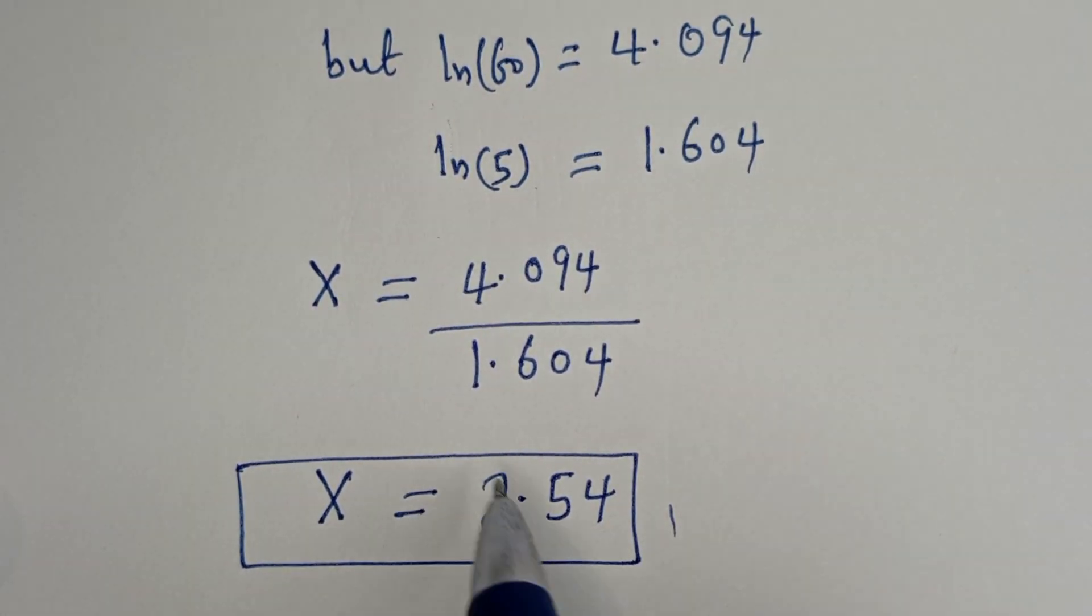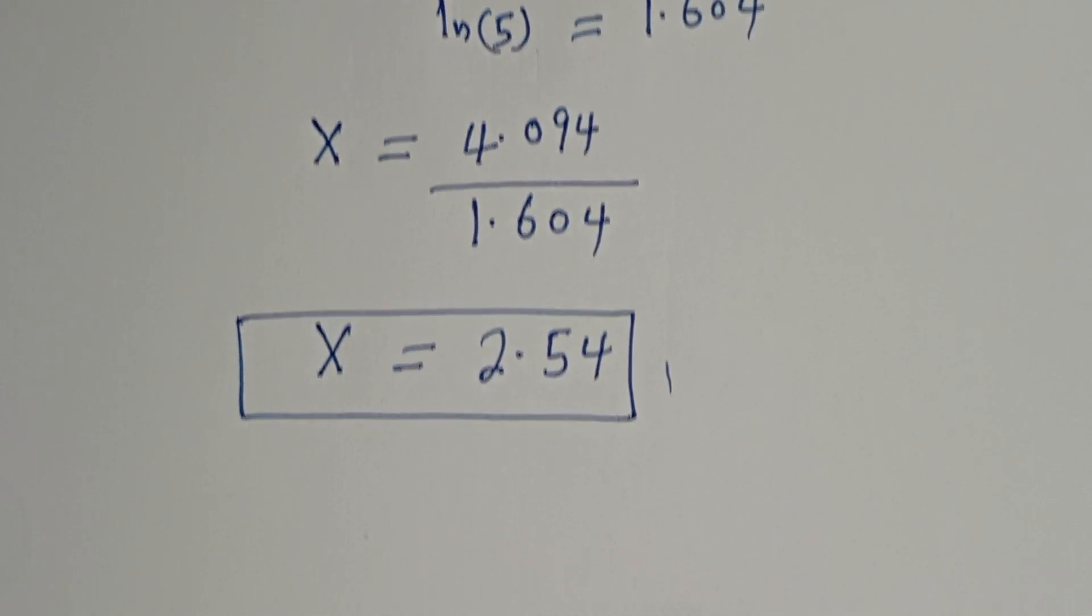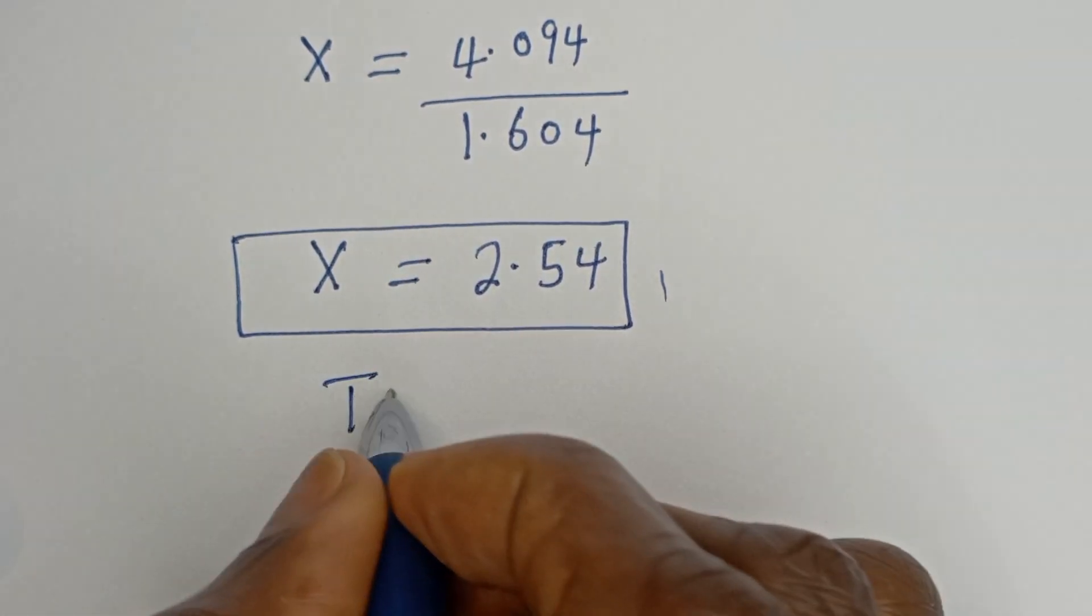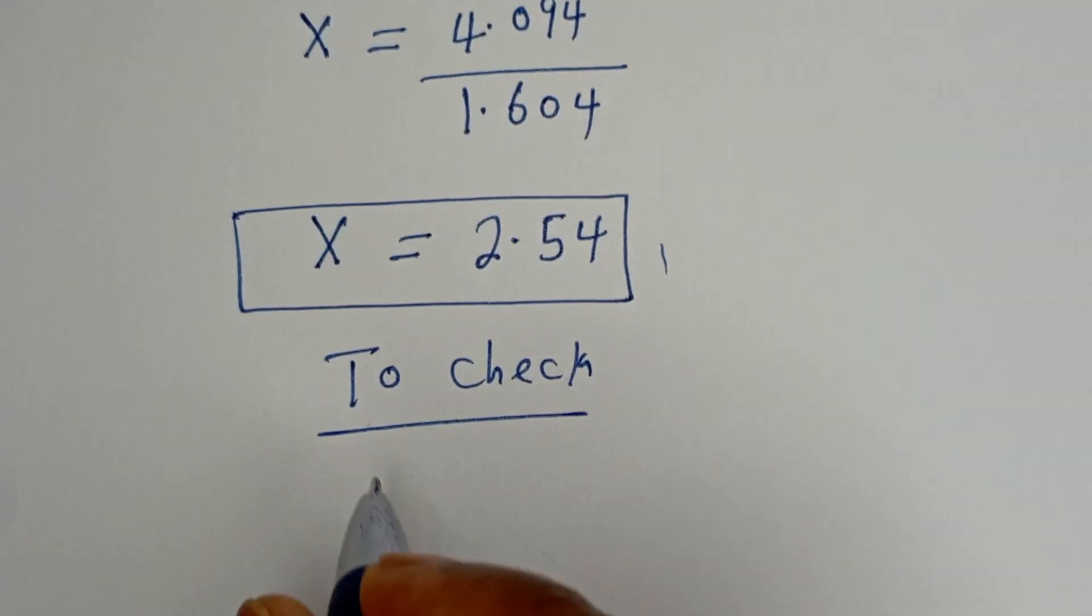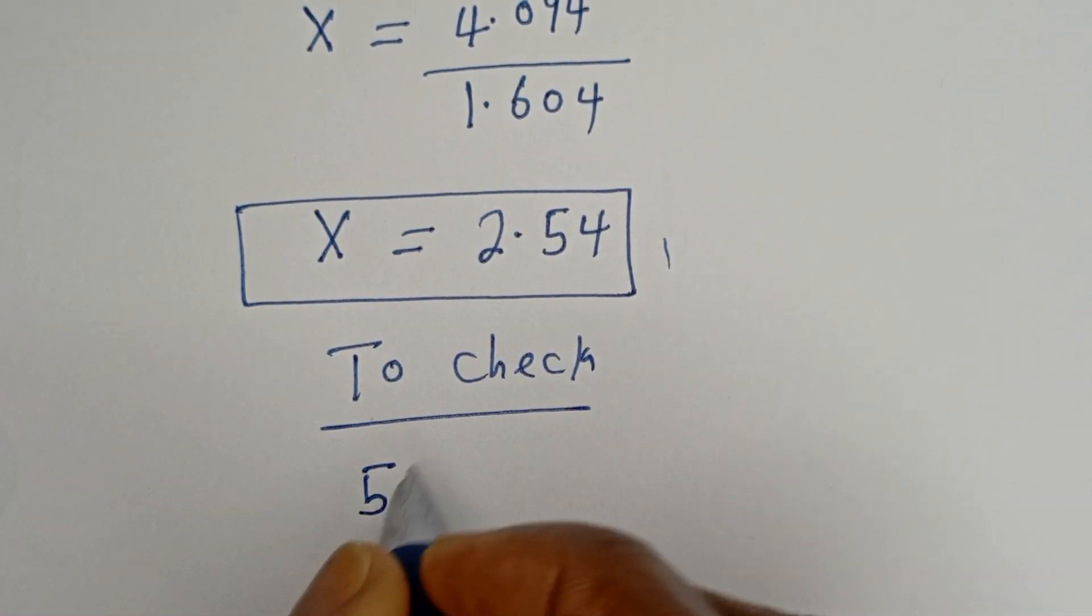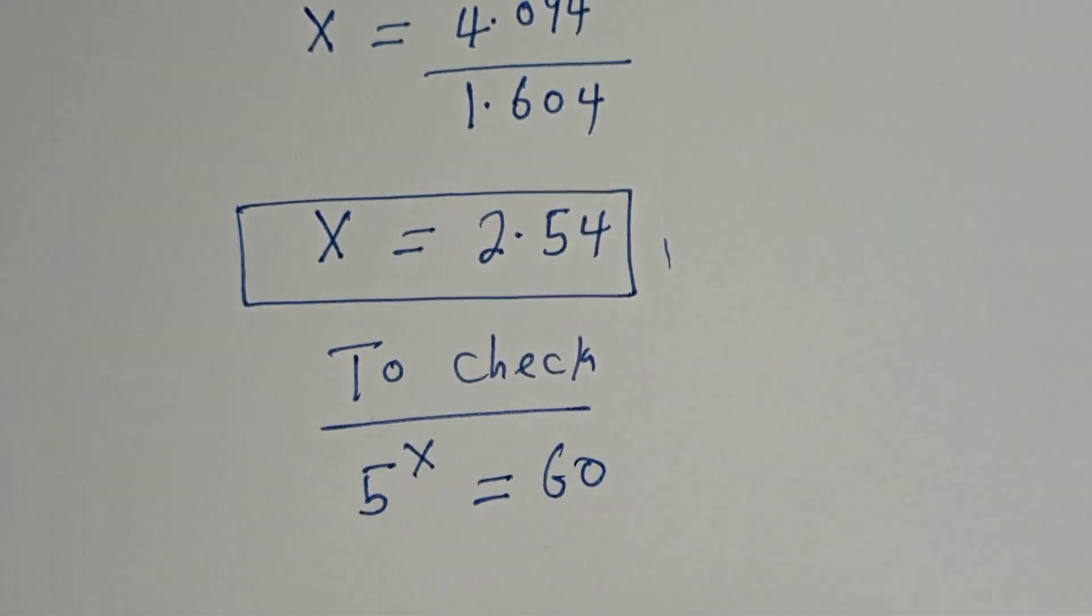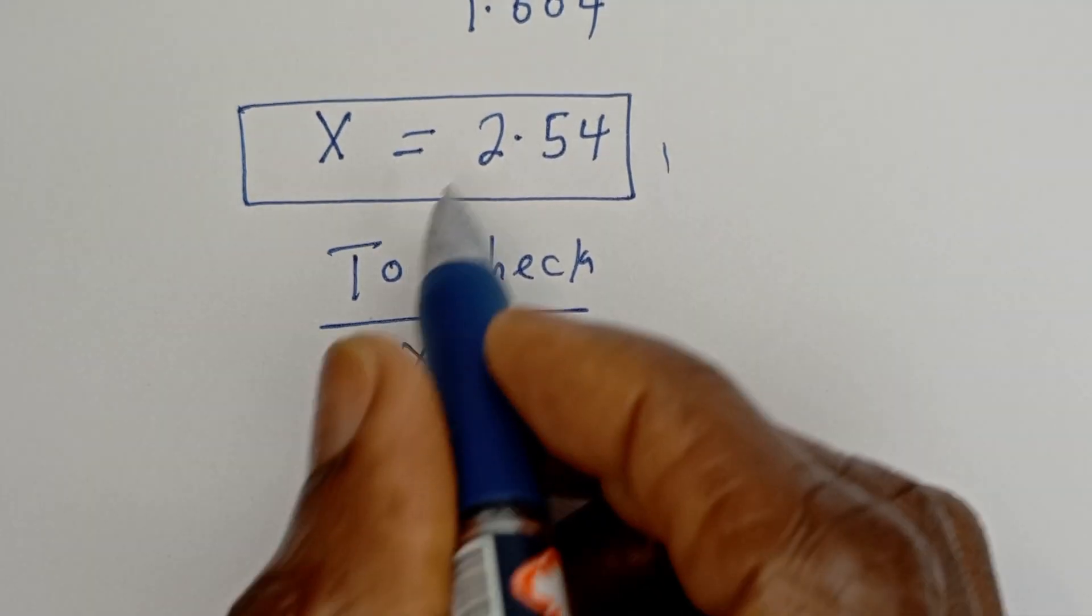We can check to confirm if this answer is right or wrong. Let's check. To check, we have 5 to the power of x is equal to 60. Then when x is 2.54,